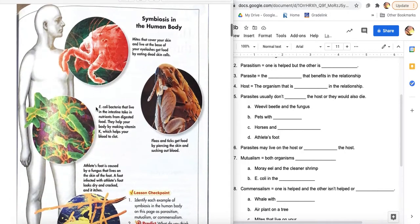On the next page in the human body, E. coli bacteria that live in the intestines take in nutrients from digested food. We're like, oh man, it's stealing our nutrients. They help your body by making vitamin K, which helps clot your blood. So at first when I was reading this, I'm like, oh, E. coli. I always heard like we have an E. coli breakout. That's a bad thing. It's like a food poisoning.